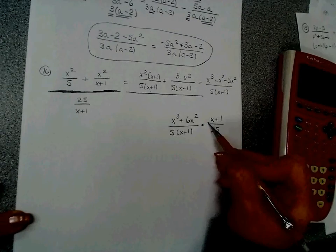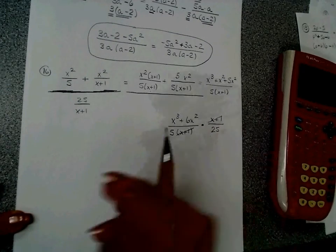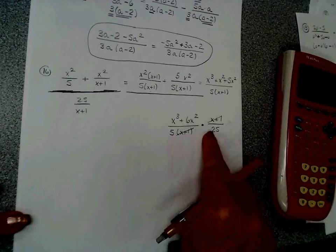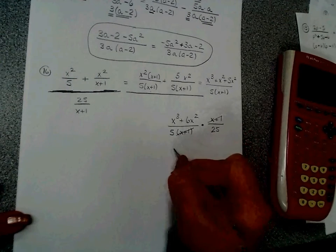That x plus 1 and that x plus 1 cancel. This 5 and this 25 are side by side. They do not cancel. The numerator factors, but all I could do is pull out an x squared, and it will not simplify with this 125 I'm getting on the denominator.